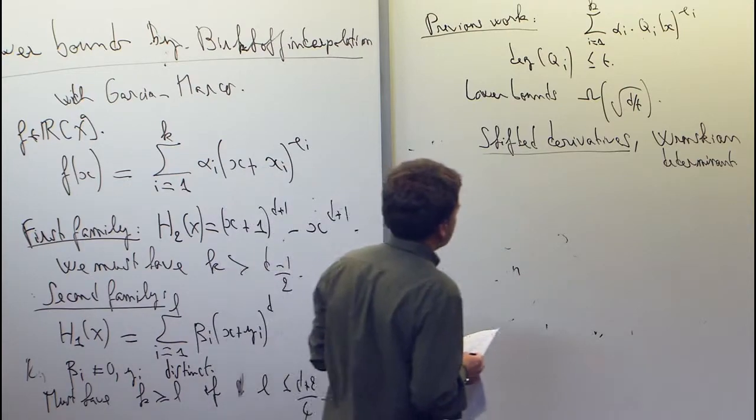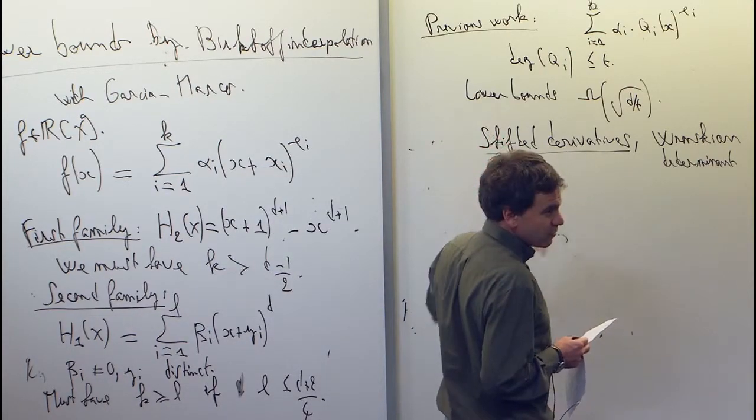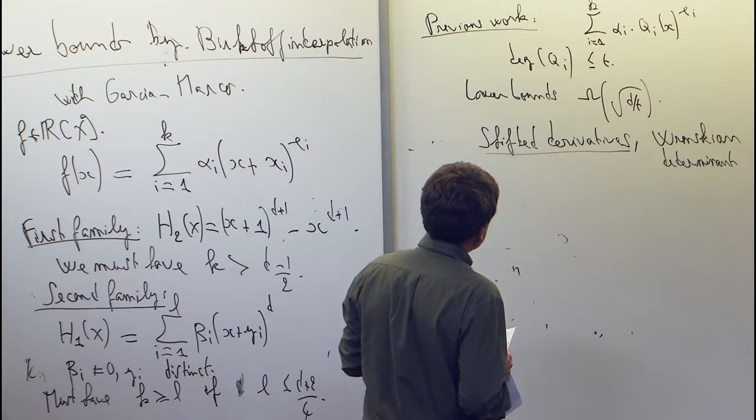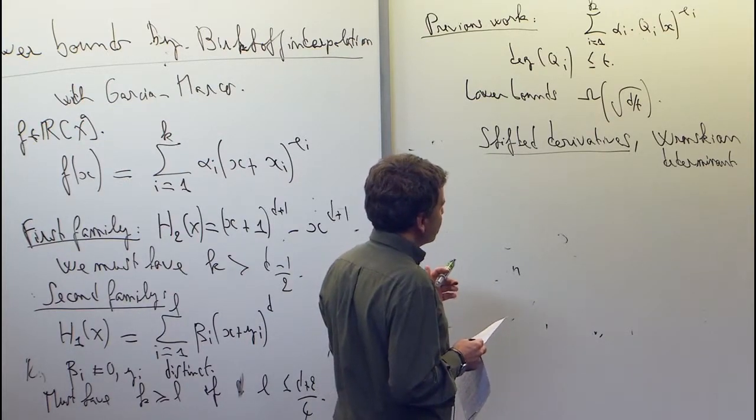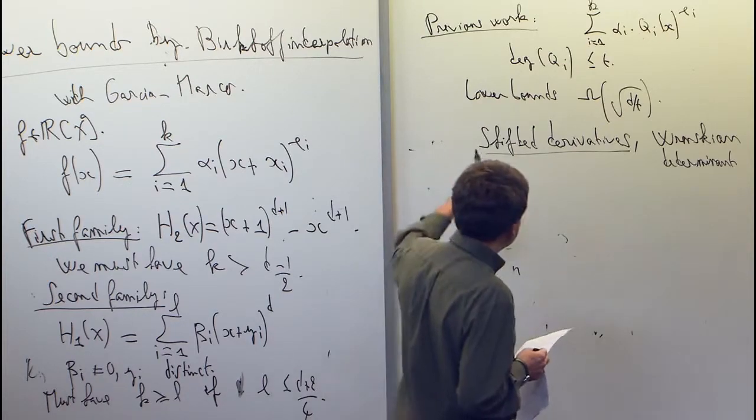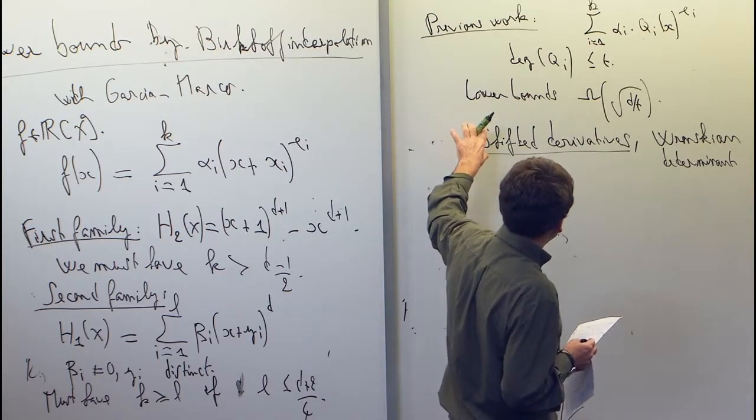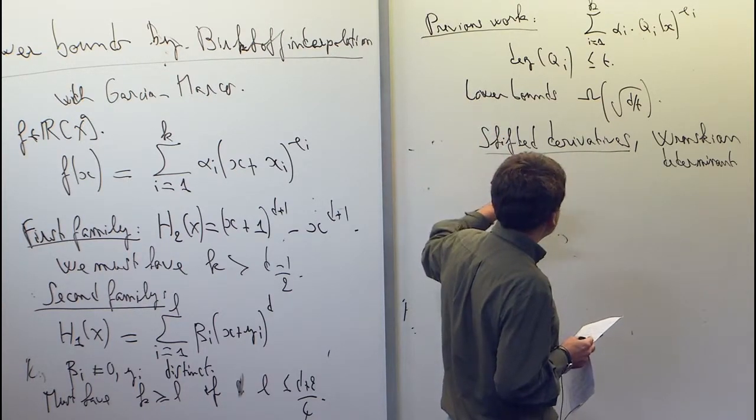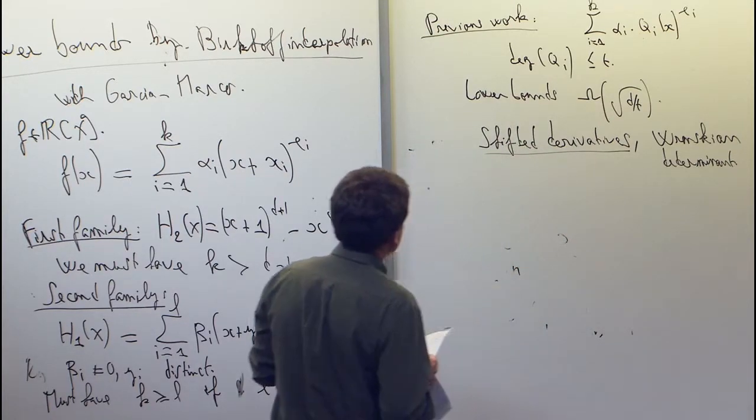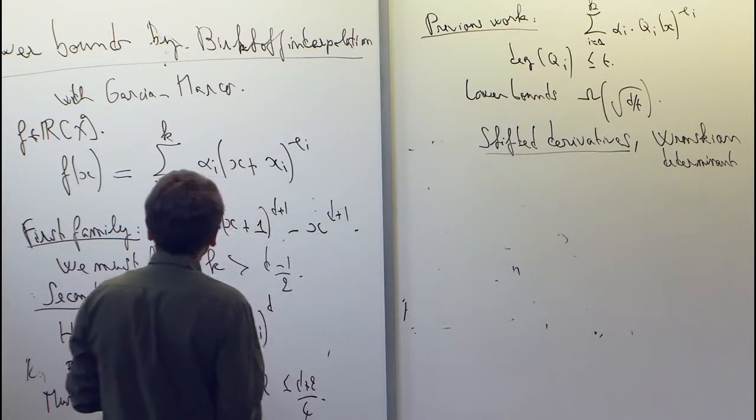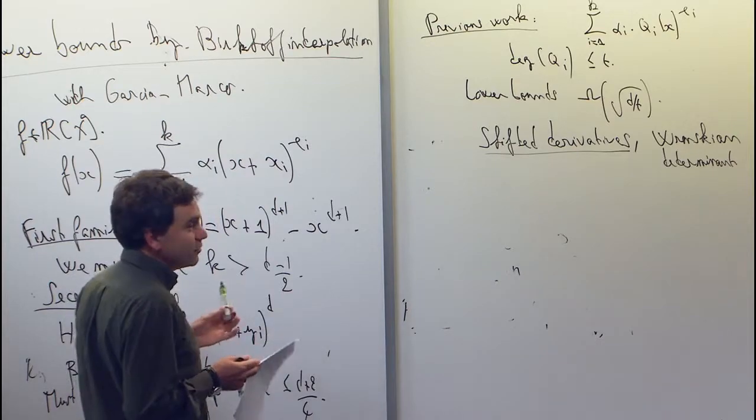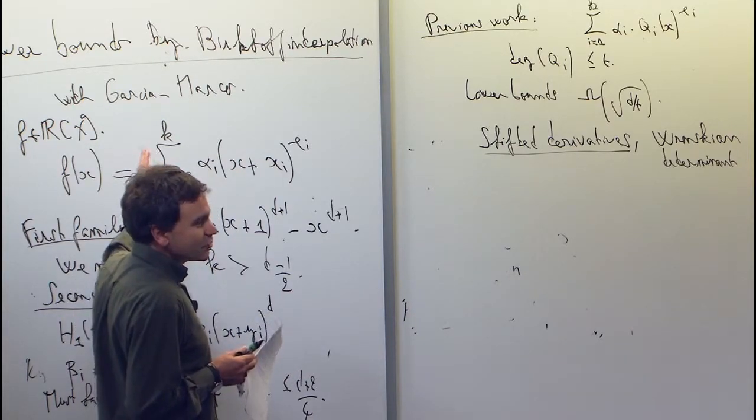And you may have seen lots of recent papers on lower bounds for arithmetic circuits based on shifted derivatives. Lots of interesting results, but I think maybe they got stuck a little bit by now, and it's more or less clear that you're not going to separate VP from VNP using just this technique. So it's interesting to find some maybe more powerful techniques. So this method here that we have is based on polynomial interpolation, and it does better, at least on one toy model.